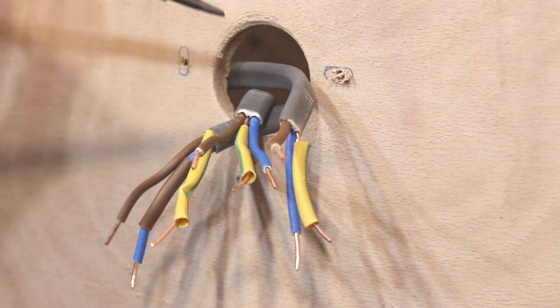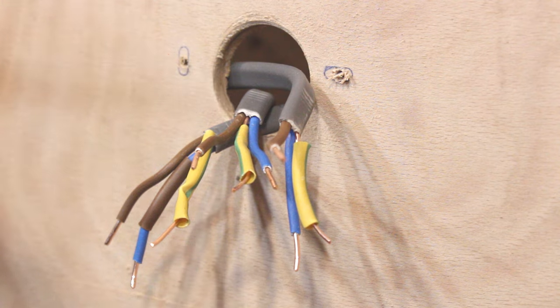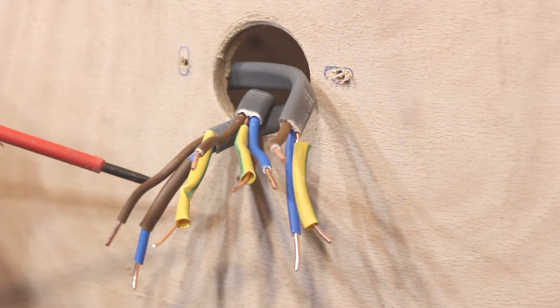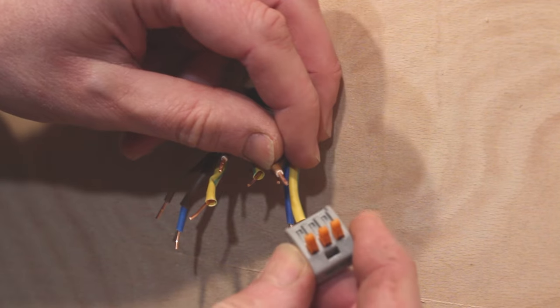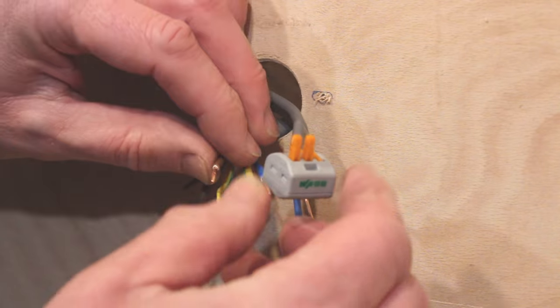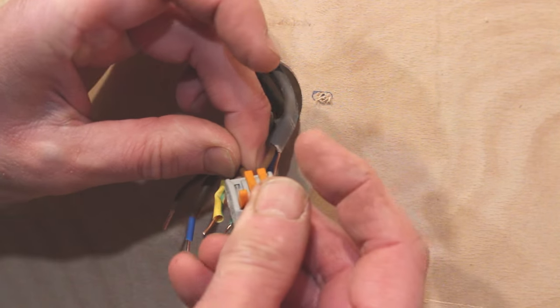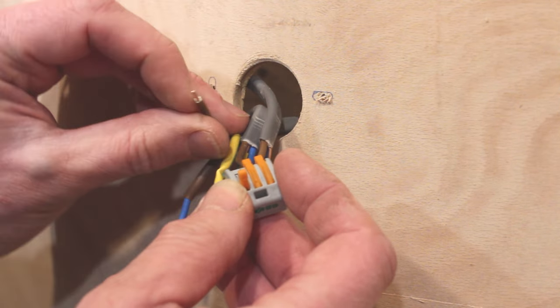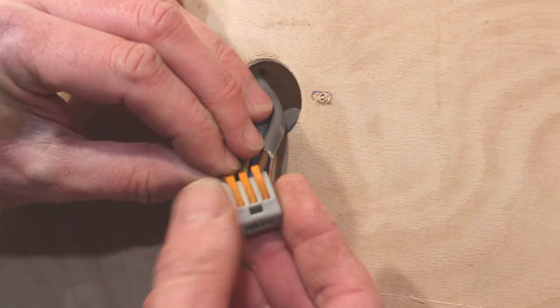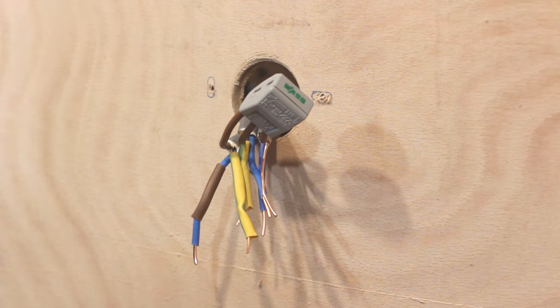So now we're ready to actually take the WAGO connector and connect up the live from the two lighting circuit wires and also the permanent live on the switch wire. So take your WAGO with the three-way connectors on it and put in the live from the lighting circuits. Make sure it's fully inserted. Clamp down and then the permanent live from the switch. Again make sure it's fully in. Close the clamp, give it a good tug. So just bend it back out of the way ready for the next stage.